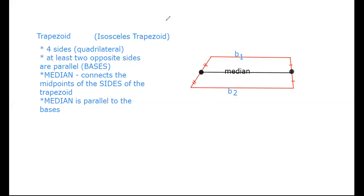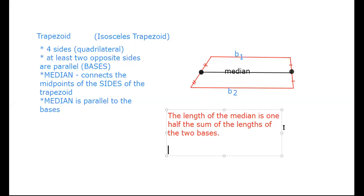So you have another formula in this one. The length of the median is one half the sum of the length of the two bases. So the median length equals B1 plus B2, all of that divided by two. And it's the length of the median that we're talking about. The sum of the bases divided by two, that's half.